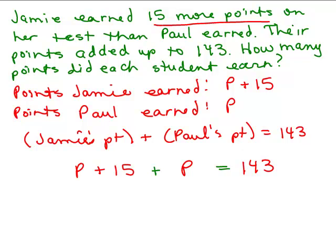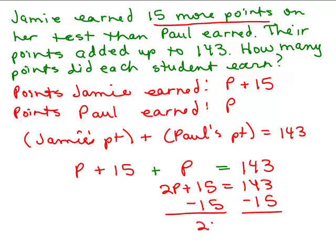Now we have to solve this. We're going to simplify the left-hand side, 2p plus 15 equals 143, subtract 15 from both sides to isolate p, so I have 2p equals 128, and then we're going to have to divide by 2. If you divide both sides by 2, we get p equals 64.